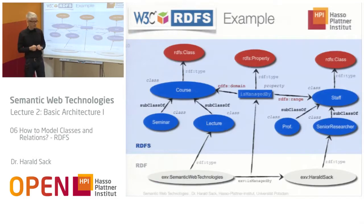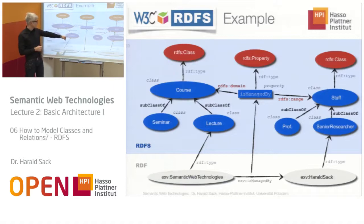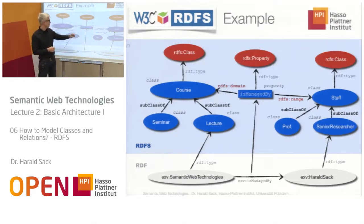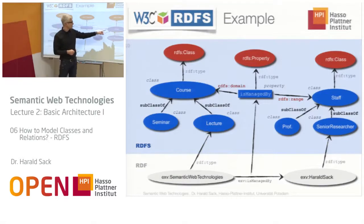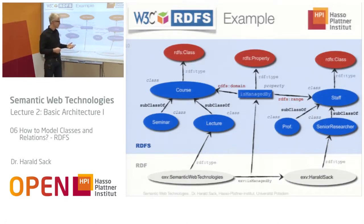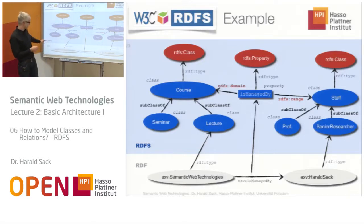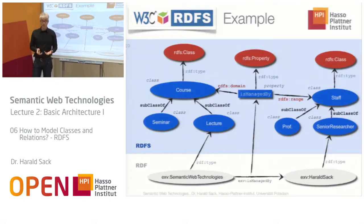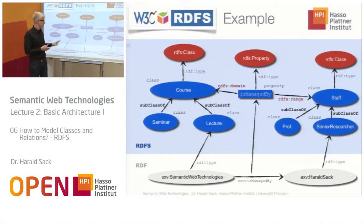In a short example, we have Semantic Web Technologies managed by me. It is of type Lecture, and Lecture is a subclass of Course, which is a class. The property 'is managed by' has a domain of Course and a range of Staff. You see that defining conceptual models like this is pretty simple with RDFS. In blue you have the RDFS part — the terminological knowledge — and below, the RDF part, which is the instantiation of this terminological knowledge. This terminological knowledge expressed by classes and relations between classes is the so-called ontology, or the terminological part of the RDFS knowledge base.